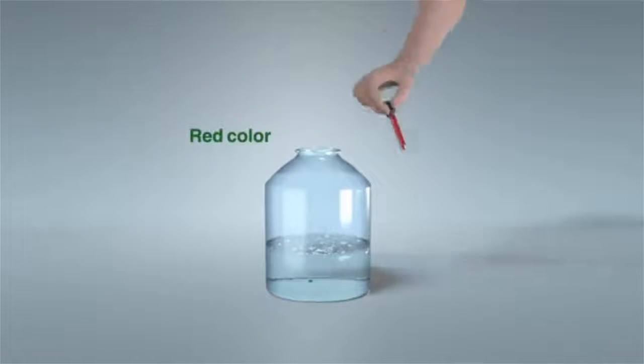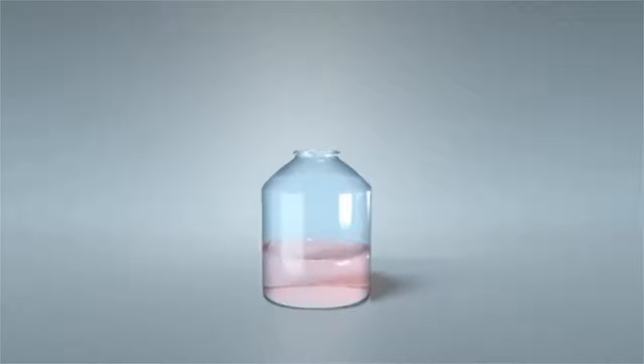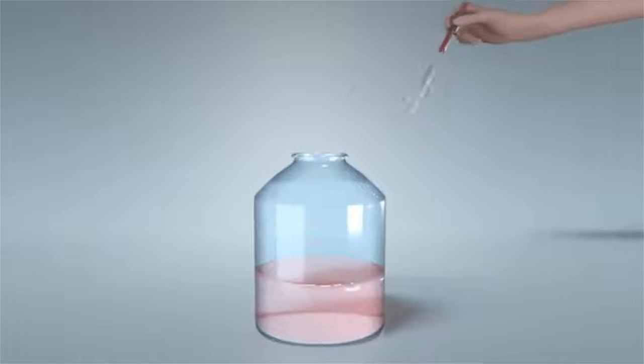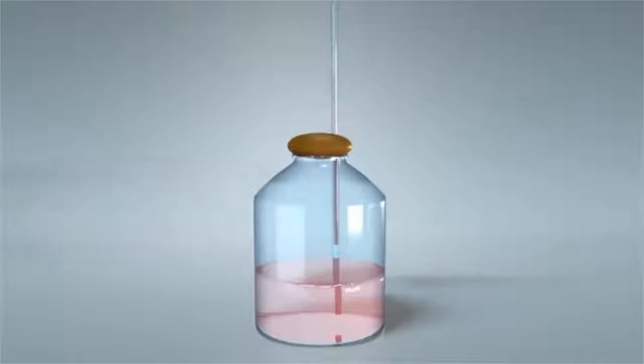Then add some drops of red color and stir well. Put the straw inside the bottle without touching the bottom. Then use the clay to fix the straw and close the mouth of the bottle.